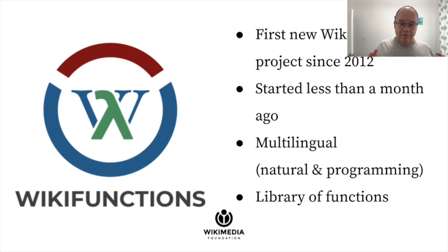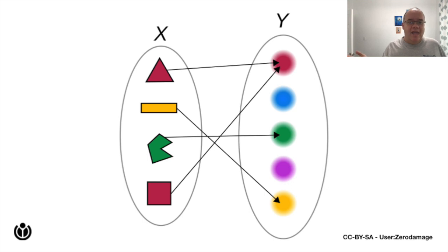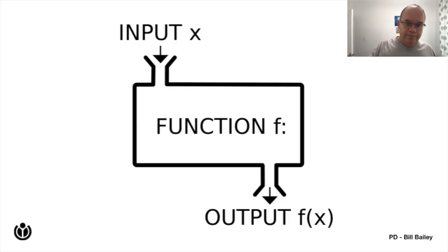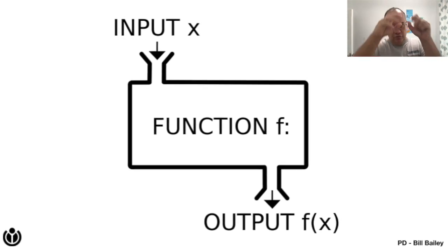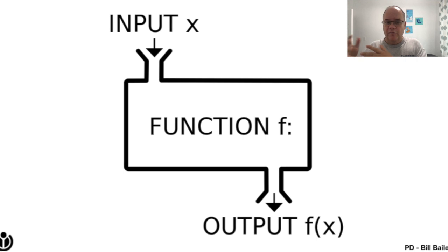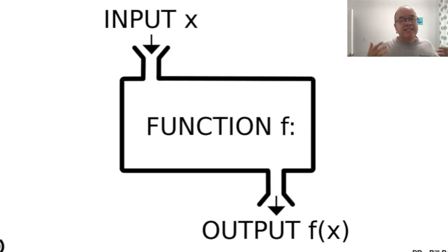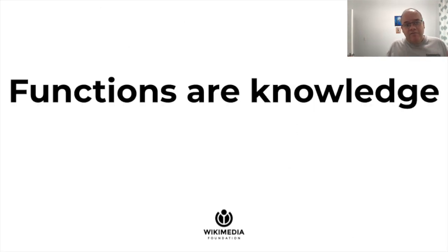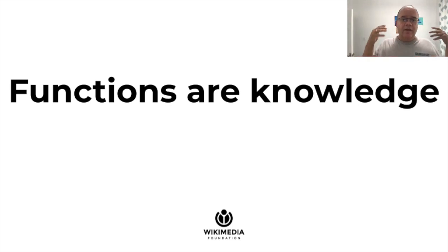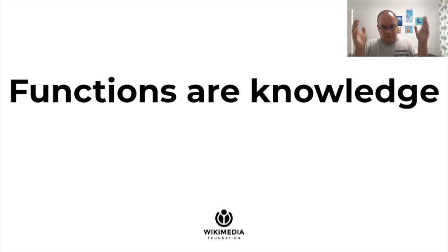Wikifunctions provides a library of functions that you can use in many different circumstances. But what does it mean — what is a function? Mathematically, a function is a mapping from elements of one set to elements of another set. Here's a different explanation: a function is something that takes an input and transforms it predictably into an output following a specific recipe. It is some form of process, or calculation, or transformation. And if you have something that answers questions — because this basically answers a question — that's knowledge. Functions answer questions, functions are knowledge.